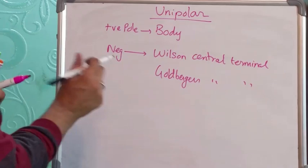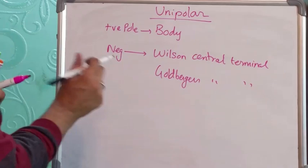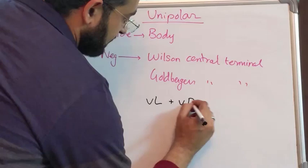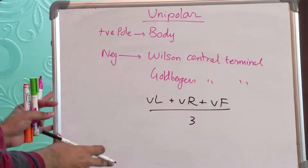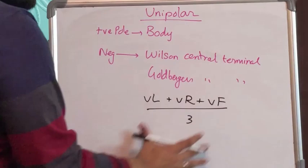So what do you mean by Wilson's Central Terminus? Wilson's Central Terminus is nothing but an average of the left arm electrode, the right arm electrode and the left foot electrode. So when you take an average of all the three, what you get is the Wilson's Central Terminus.